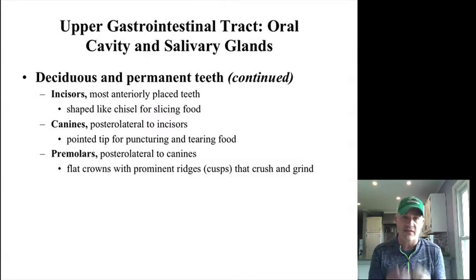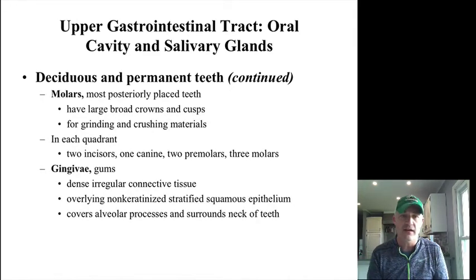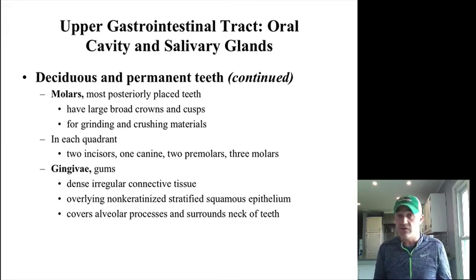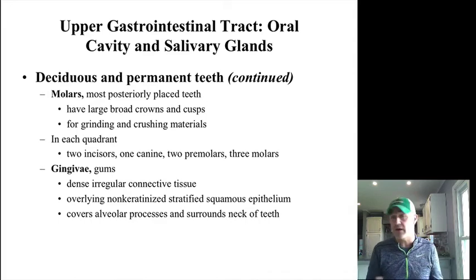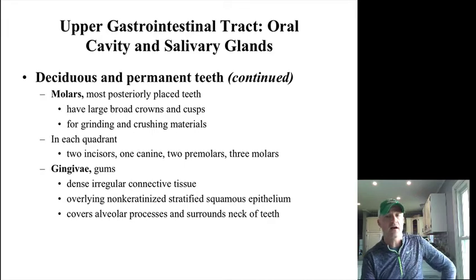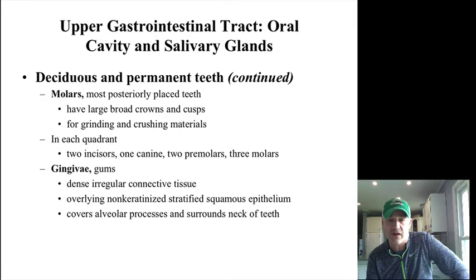We have incisors on the front, canines just outside of those, premolars, and back molars. All these teeth do slightly different things, which is part of why we're able to have the varied diet that we do — a mix of meats, vegetables, and grains. The gums and gingiva help hold teeth in place: regular connective tissue with stratified squamous epithelium over the top to help hold and secure those teeth.